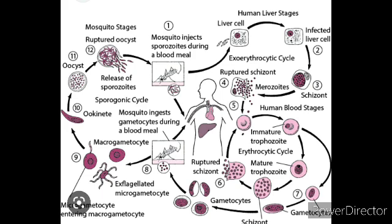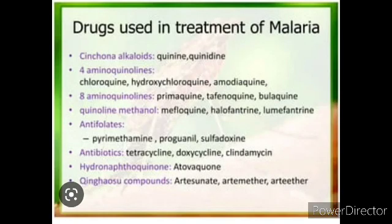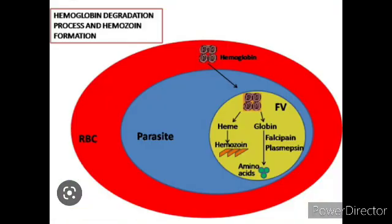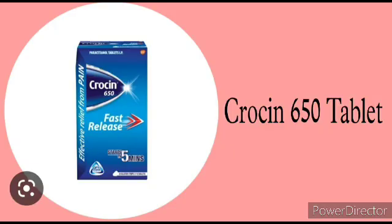Now we will talk about the treatment of malaria. There are two approaches: one is symptom-targeted and the second is pathogen-targeted. For symptoms, we use antipyretic drugs. Hemozoin is a pyrogen — a fever-generating substance — so we use antipyretic drugs to break down its effect. One very common drug is crocin, which is an antipyretic drug, but it does not kill the pathogen.